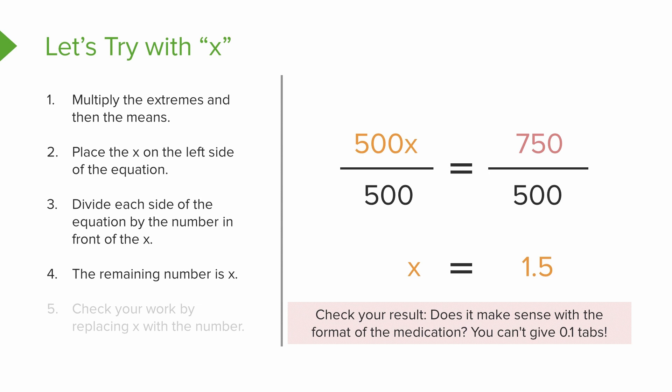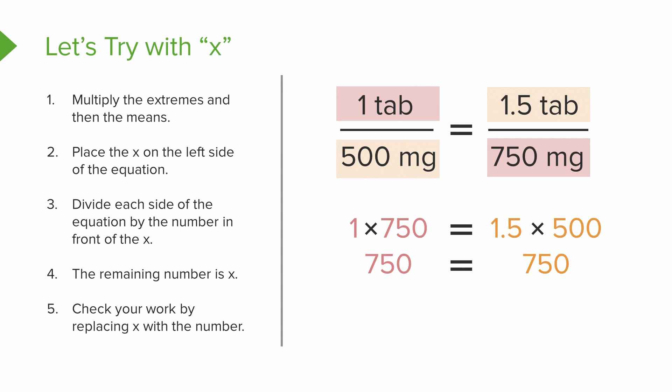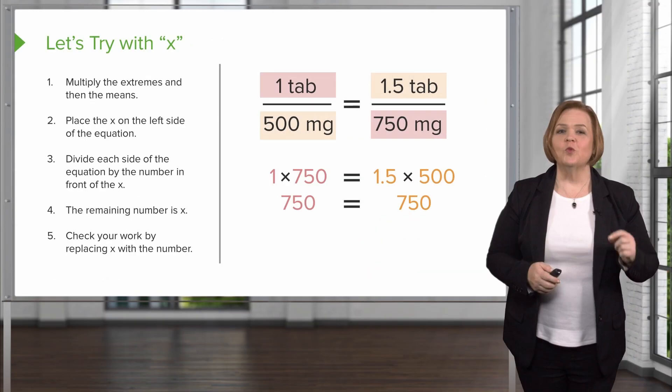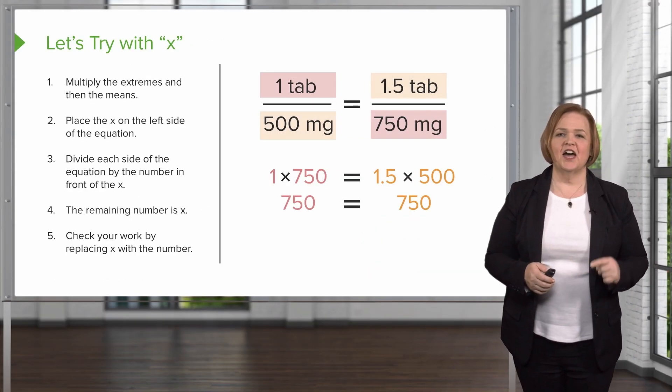Now that fifth step is to always check your work. So go back and plug x back in. So you'll see we have one tab divided by 500, one and a half by 750, and we've plugged one and a half in instead of where x was. We do the cross multiplication. We come up with one times 750 equals one and a half times 500. Exactly. They're both 750 and one and a half times 500 is also 750. So we know that the safe dosage is one and a half tabs of acetaminophen for this patient. How often? Right. Every six hours. Good job. One and a half is the correct dose for our patients.